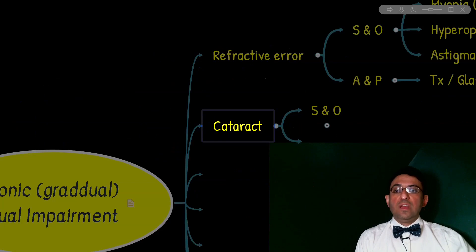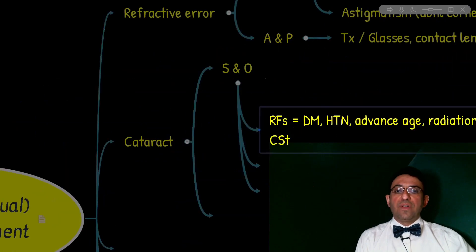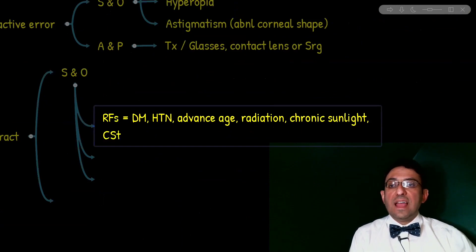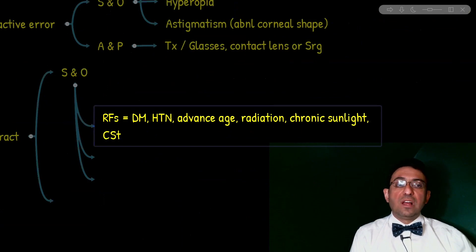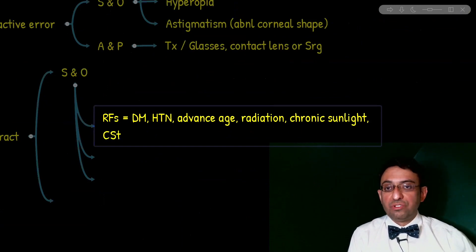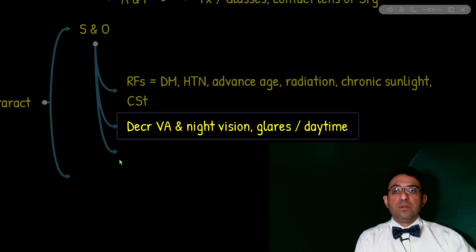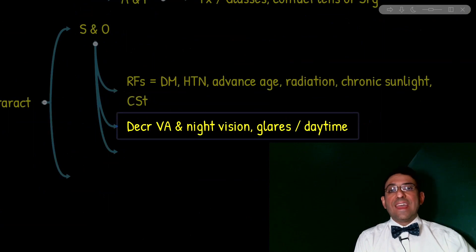The next condition is cataract. Risk factors include diabetes, hypertension, advanced age, radiation exposure, chronic sunlight exposure, and corticosteroid use. The findings associated with cataract are decreased visual acuity, impaired night vision, and presence of glares during daytime.